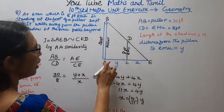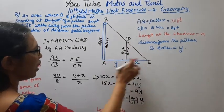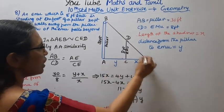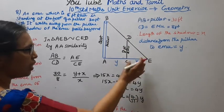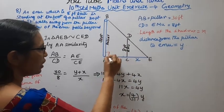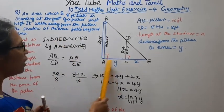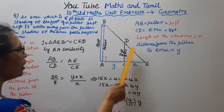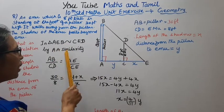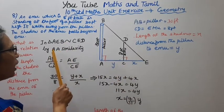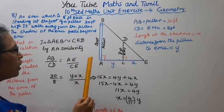In triangle ABE and triangle BCD, angle AEB equals 90 degrees, angle BCD equals 90 degrees. Similar triangles by AA similarity.